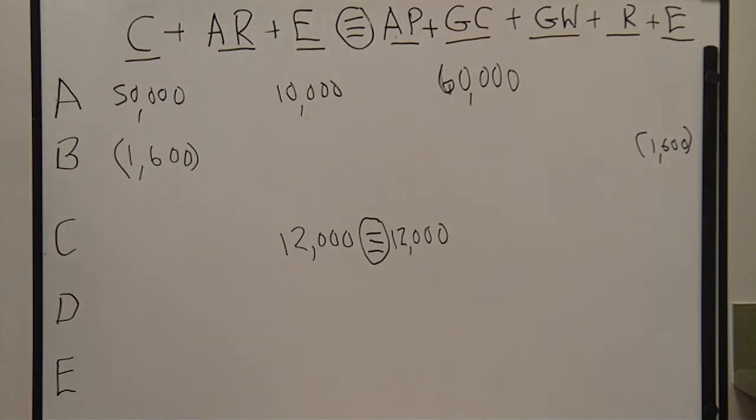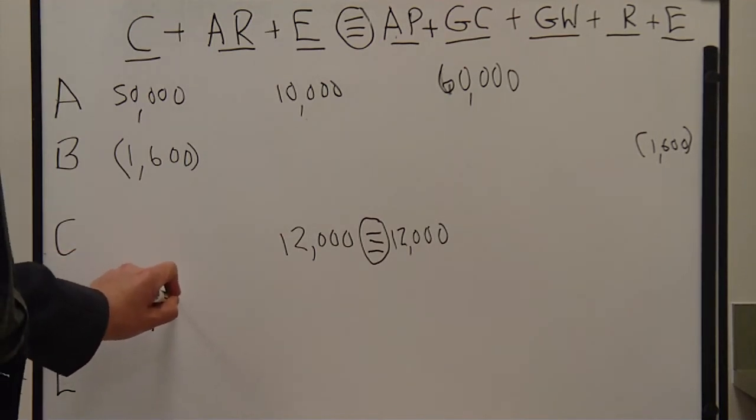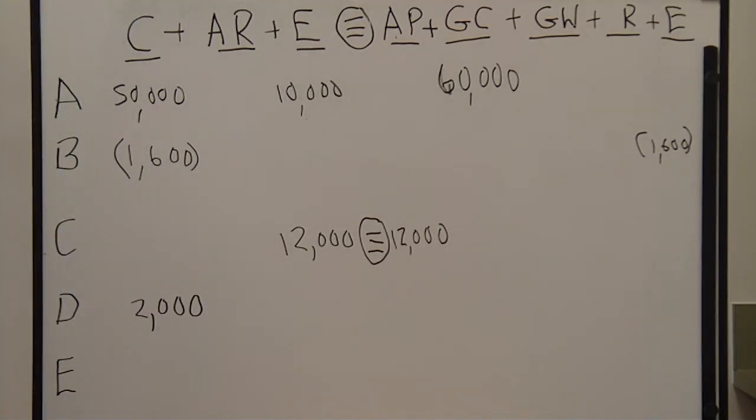In transaction D, the company did $2,000 worth of work for a client, and they immediately collected the money. When they immediately collected the money, $2,000 goes up in cash. Got to have something on the right go up. Revenue was defined earlier by me as assets received in exchange for work. If it wasn't defined earlier by me that way, it was sort of defined in your book that way, and that's the definition I'm giving to it. So, we have revenue also going up $2,000.